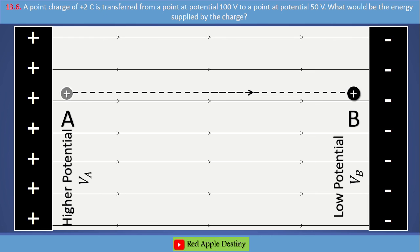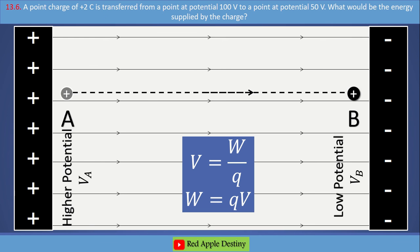Using V equals W by Q, the formula becomes W equals QV. Since the ability to do work equals energy, this work is electric potential energy. So potential energy at point A is UA equals QVA, and potential energy at point B is UB equals QVB.